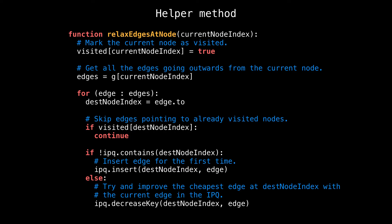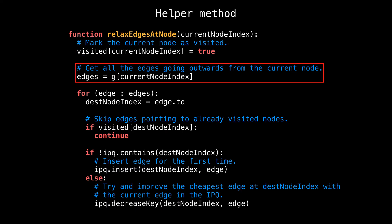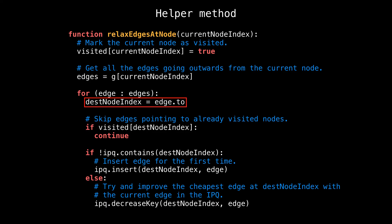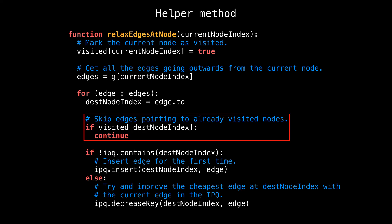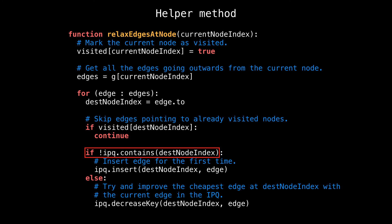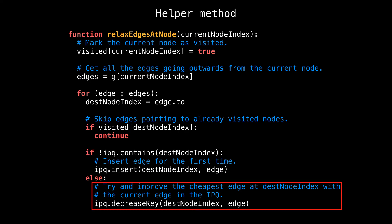Here we are — this method takes a single argument, which is the current node we care about. The first thing we do is mark the current node as visited so we don't visit it again. Then we reach into our graph adjacency list and get all the edges going outwards from the current node. As we iterate over all the outgoing edges, we first grab a reference to the destination node index — the node the edge is pointing at. Then we skip edges which point at already visited nodes. Now here's where we actually relax the edge: first check if the IPQ contains the key with the value of the destination node. If it doesn't, add the edge to the IPQ for the first time; otherwise, try to improve the cheapest edge at dest-node-index with the current edge.